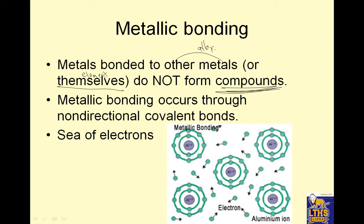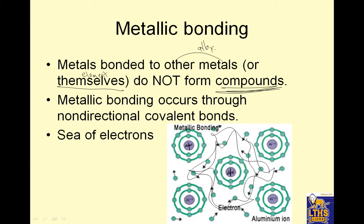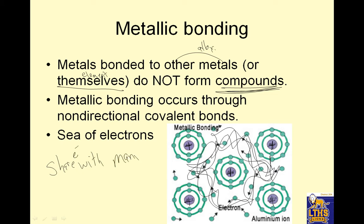What happens is we've got these electrons — you can't tell where they are, they're kind of hanging out all over the place. These electrons are negative, but they're attracted to the very positive nuclei. So they hang out near all of these positive nuclei, and the positive nuclei stay because of all these electrons around them. So they share electrons with many atoms.